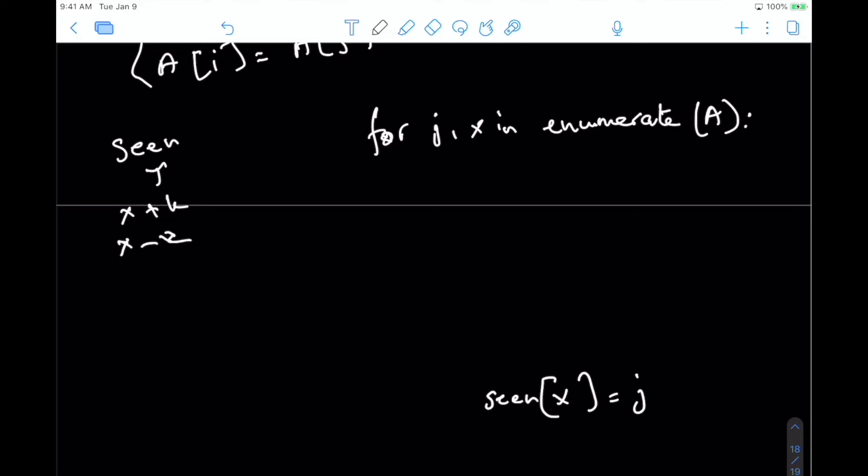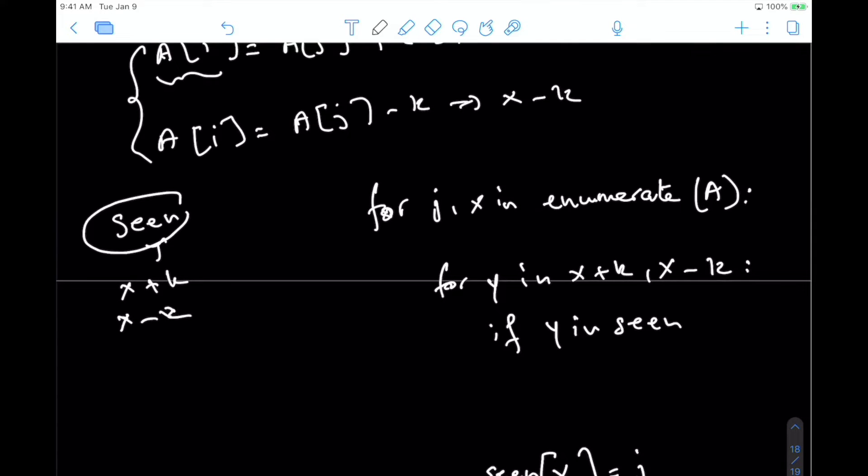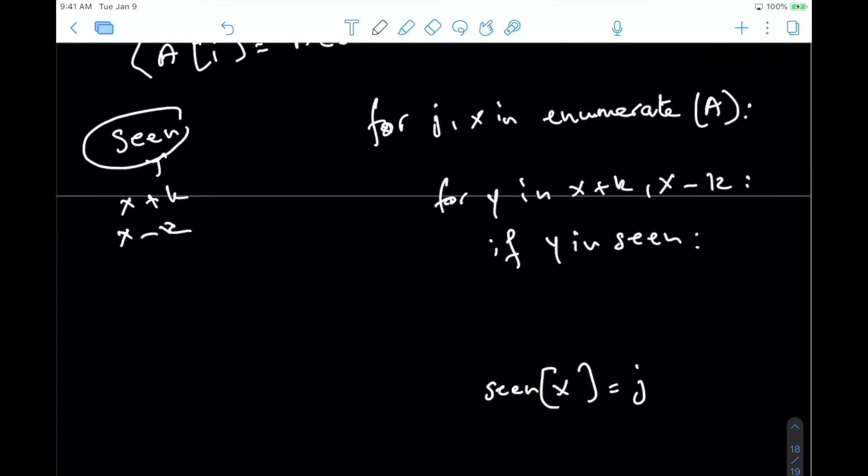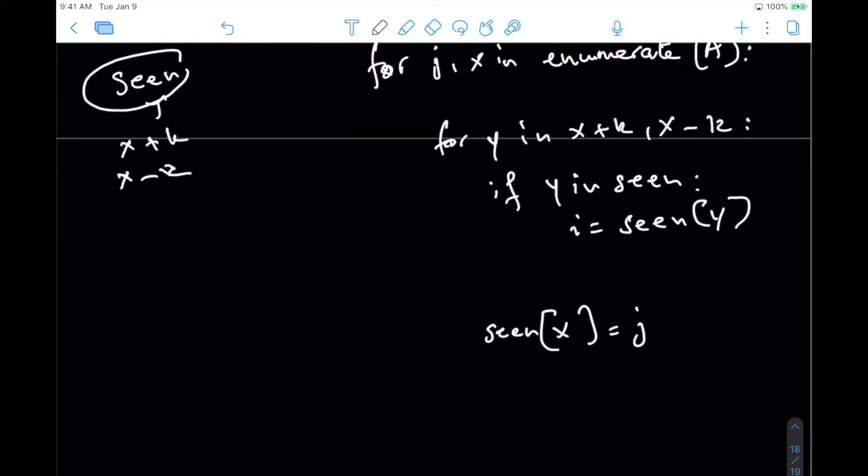Now, how do we process it? We can just go through all the possibilities, so x plus k and x minus k, let's call that y. And we check if it's in seen. So if it's in seen, then y in seen, then that means we had a previous position a_i. And now we can just get that position previously that we had. Remember, what we want is the maximum good subarray, and so that's what we need to keep track of here.